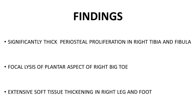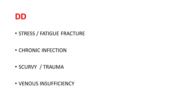With these findings, what are the differential diagnoses we can consider? The first and most common is stress fracture or fatigue fracture. The second is infection — a chronic infection like chronic osteomyelitis. The third is subperiosteal hemorrhage due to scurvy or trauma. The fourth is tumor, and the fifth is deep venous stasis — long-standing venous stasis.